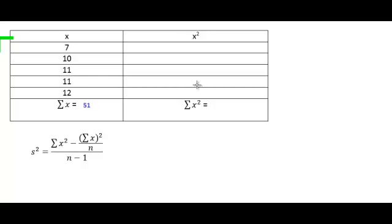Next, we want to find the summation of the squared x's. Square all the x's, and then we'll add them up. 7 squared is 49. 10 squared is 100. Then, 11 squared is 121, 121. And ultimately, 144 for 12 squared. If we add up all these numbers, we should get 535.